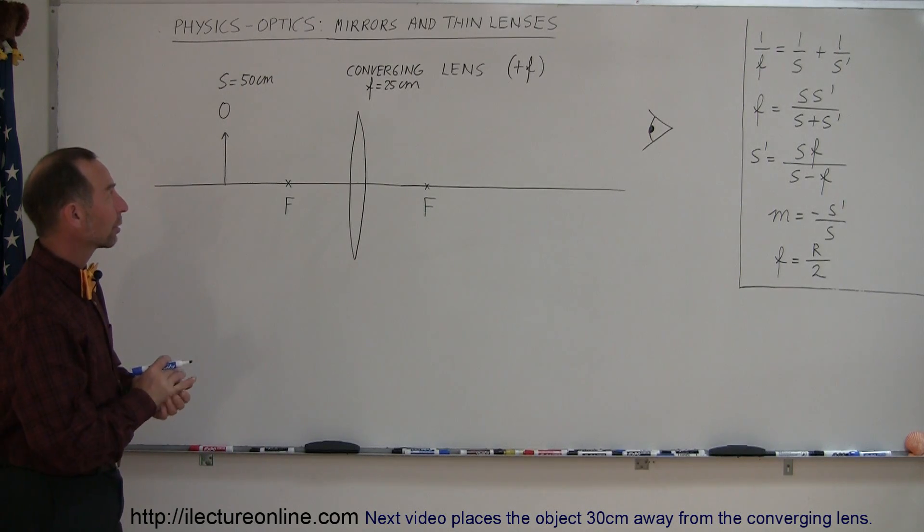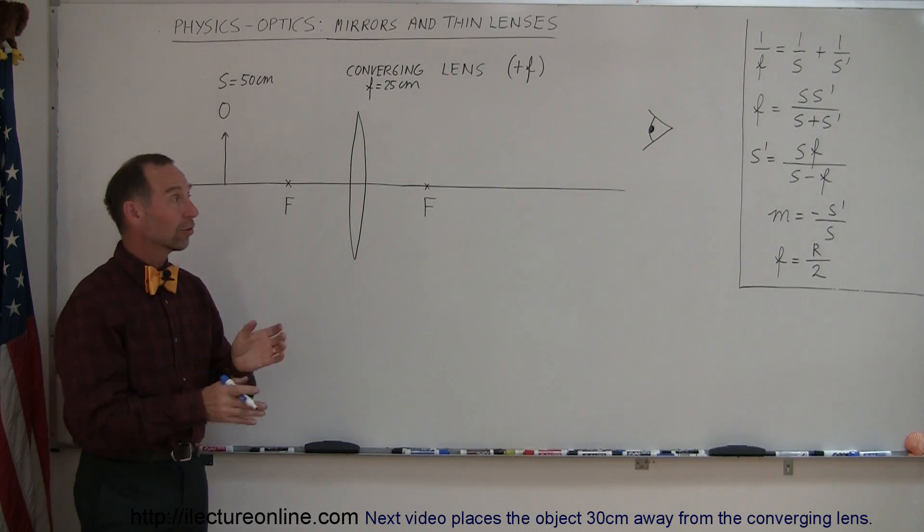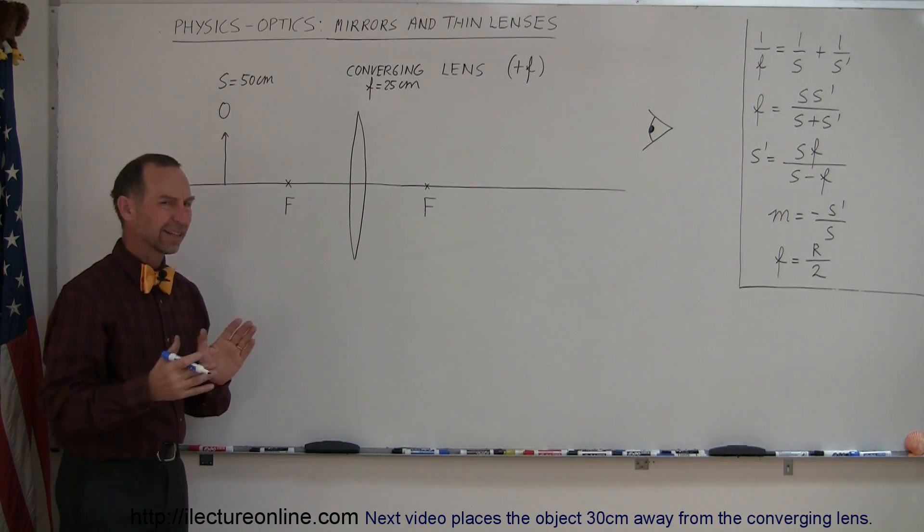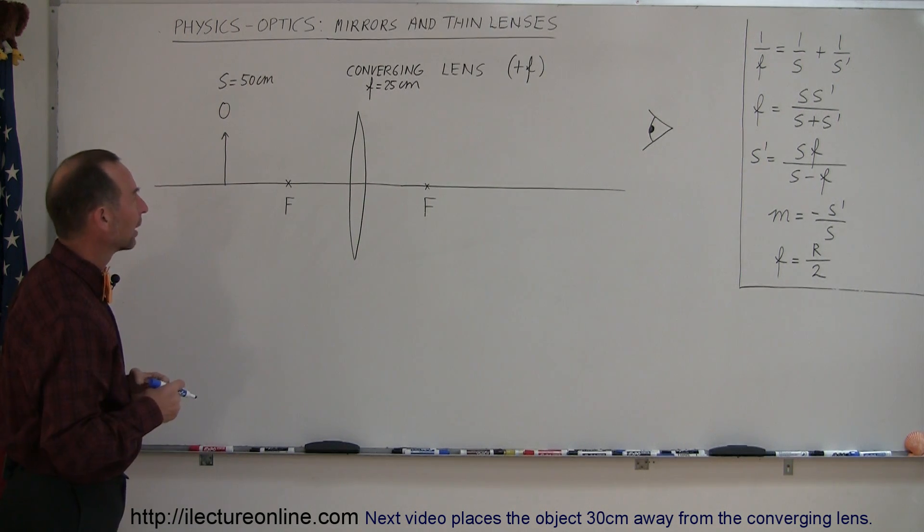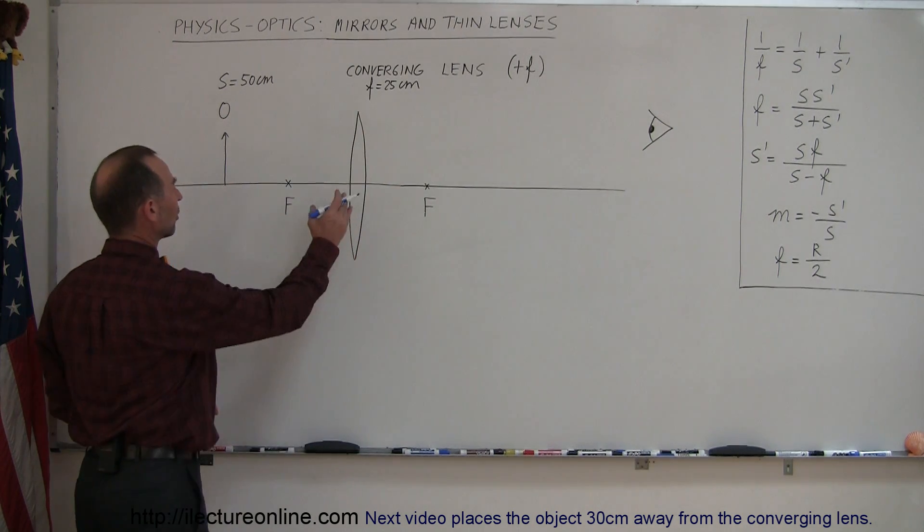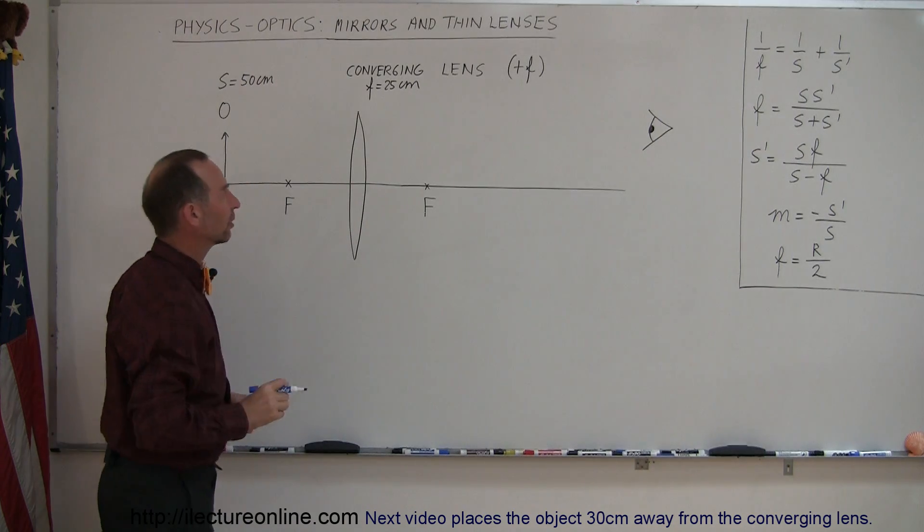And our next example here with a converging lens, and again, these are thin lenses, so the equations that we have available to us are valid. We use thick lenses, things are a little bit more complicated. We have a converging lens, same as before, focal length is 25 centimeters, so the distance from the lens to the focal point on either side is 25 centimeters.